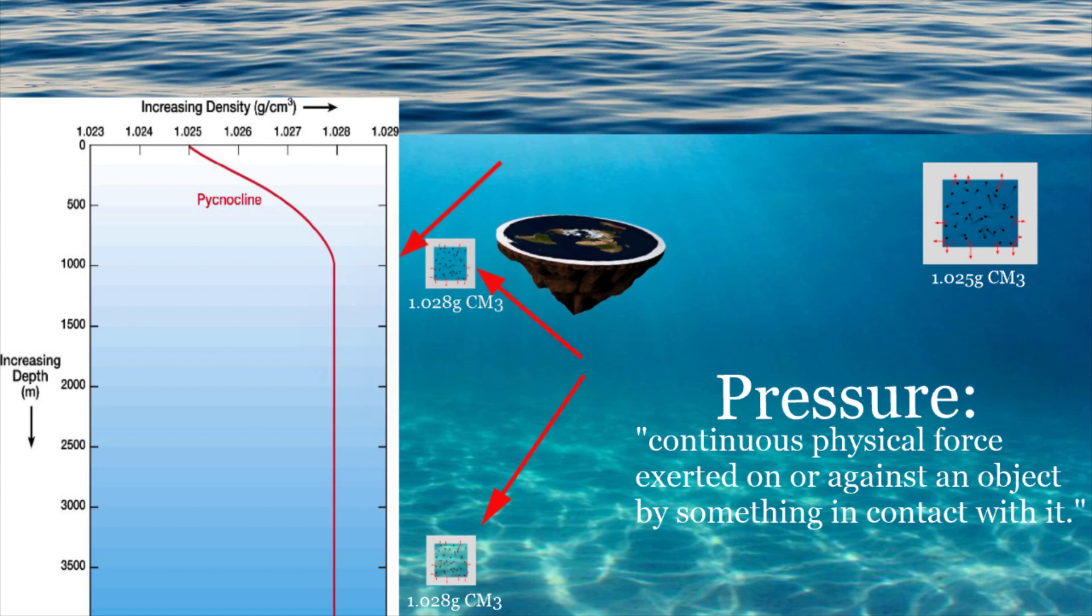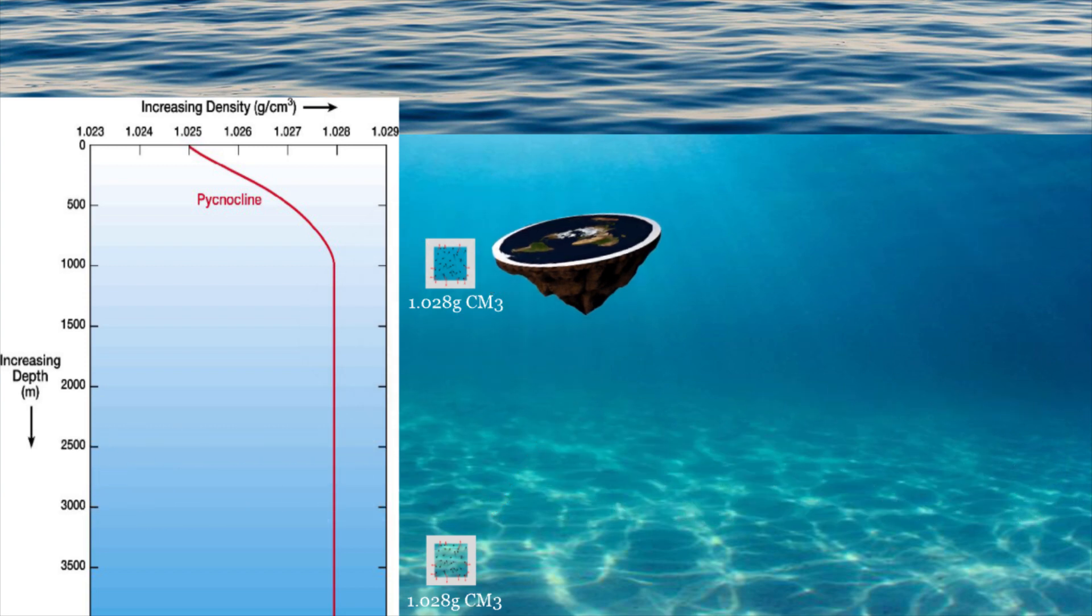This cubic centimeter of seawater is no longer falling. It is happy right where it is. There is no force pulling it, trying to make it go farther into the abyss. But if that were true, then the pressure under the water should also stop at 1,000 meters, exactly like the density curve. But does it? Well, let's take a look.